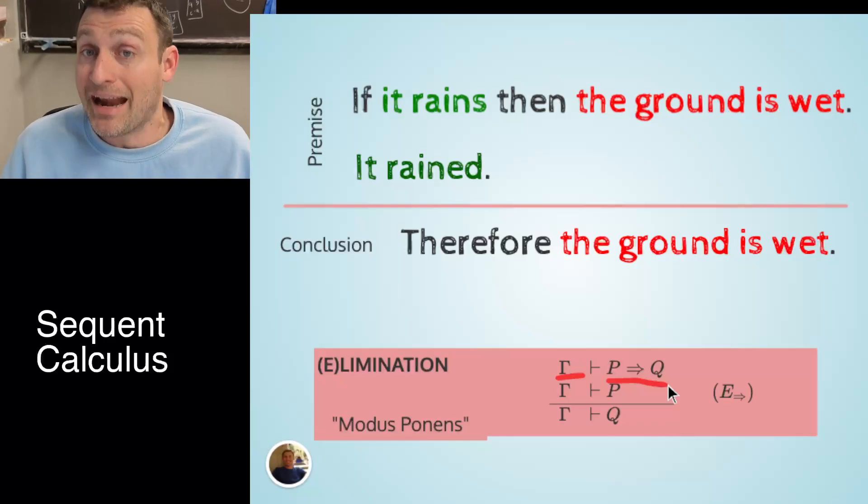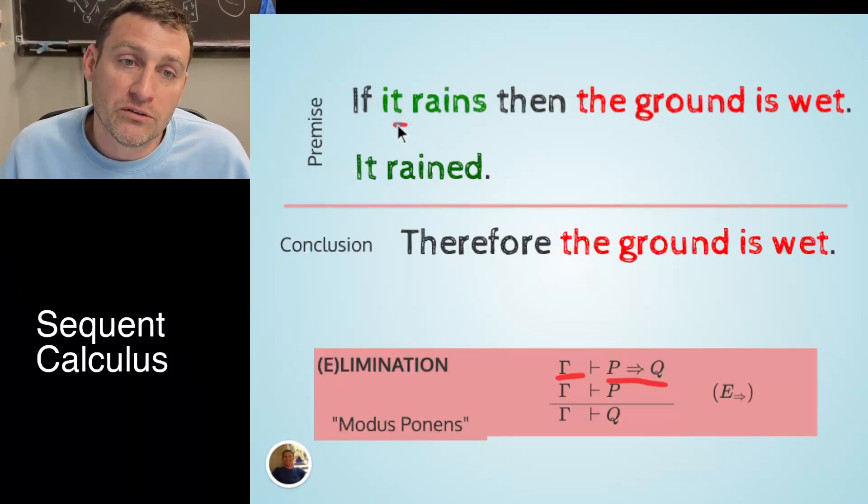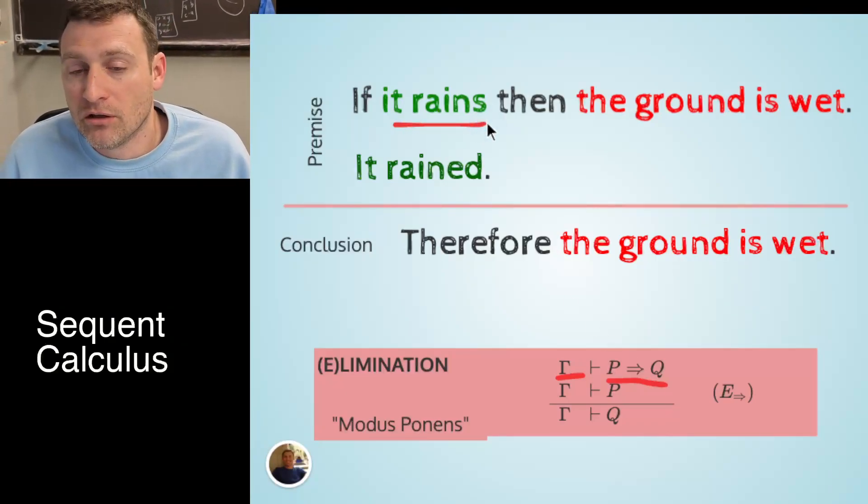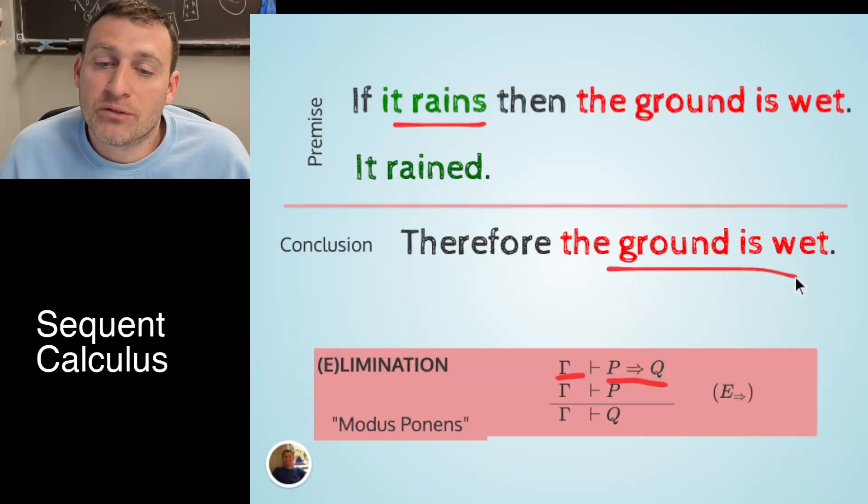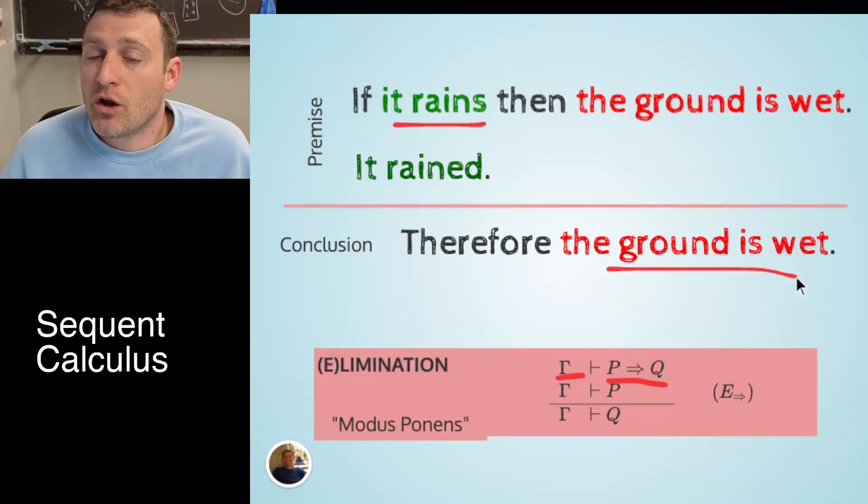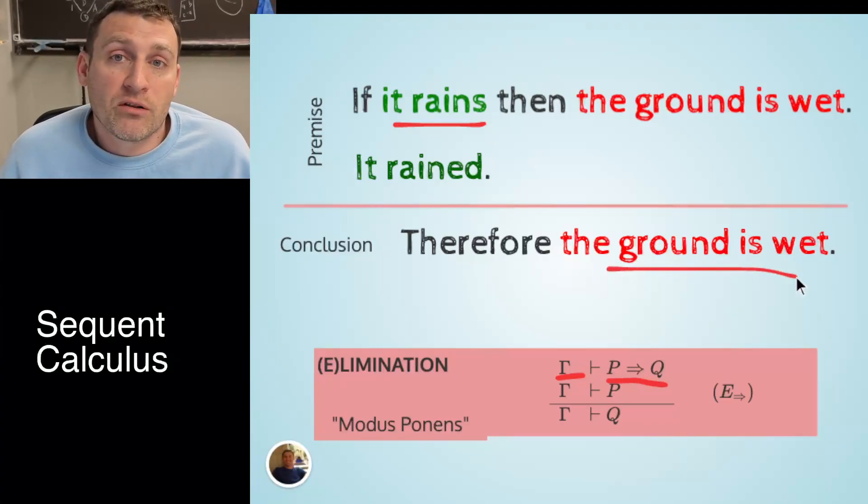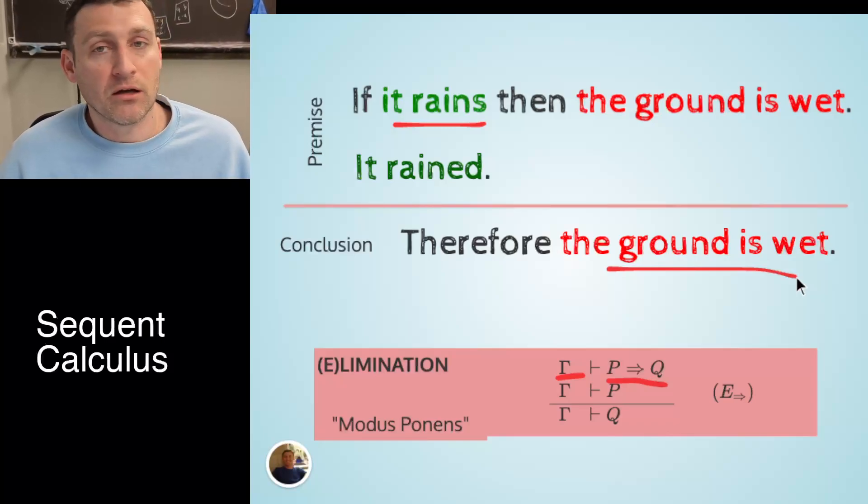The second thing we need from context is that it actually rained. We fulfilled the conditions of the conditional. And that's how we got to the conclusion. So with that structure of the argument, let's turn to the next part of the story, which is how to make a conclusion.